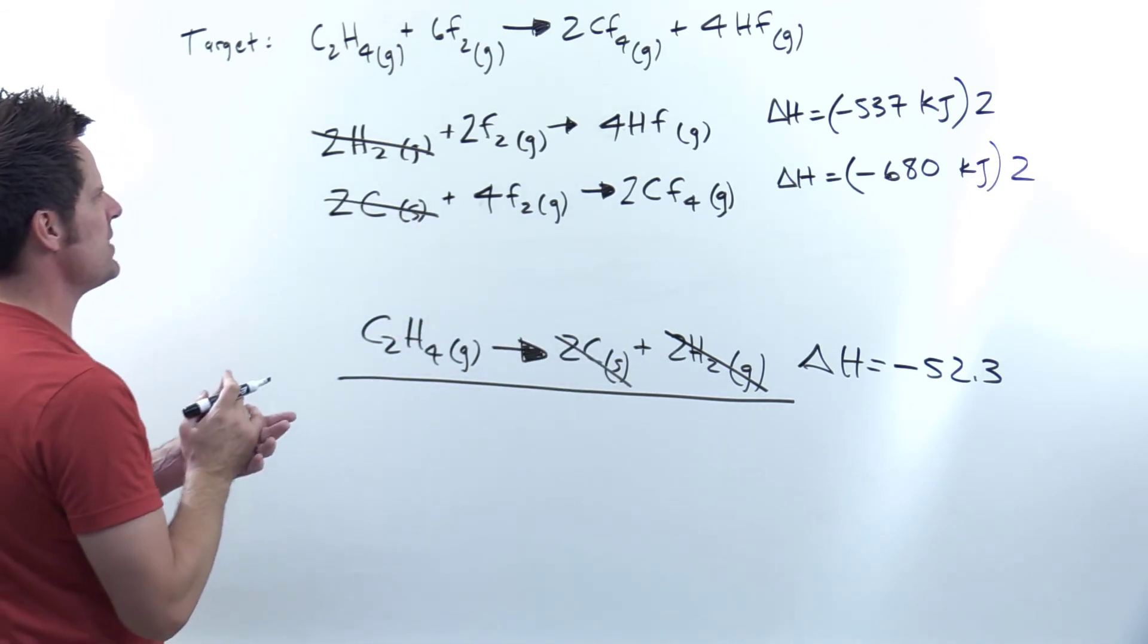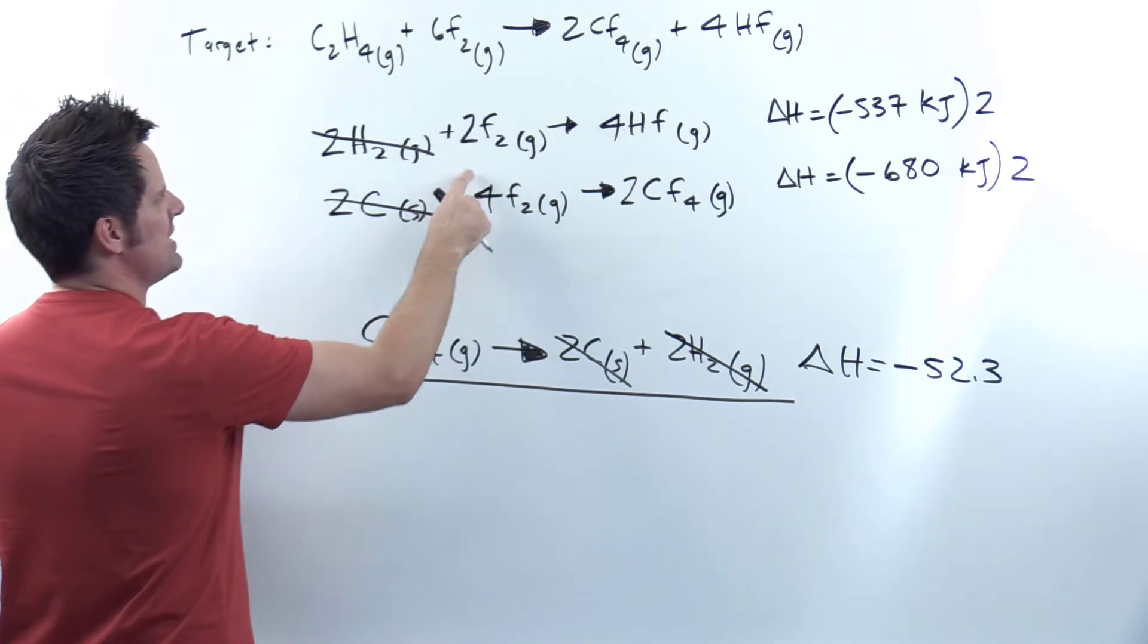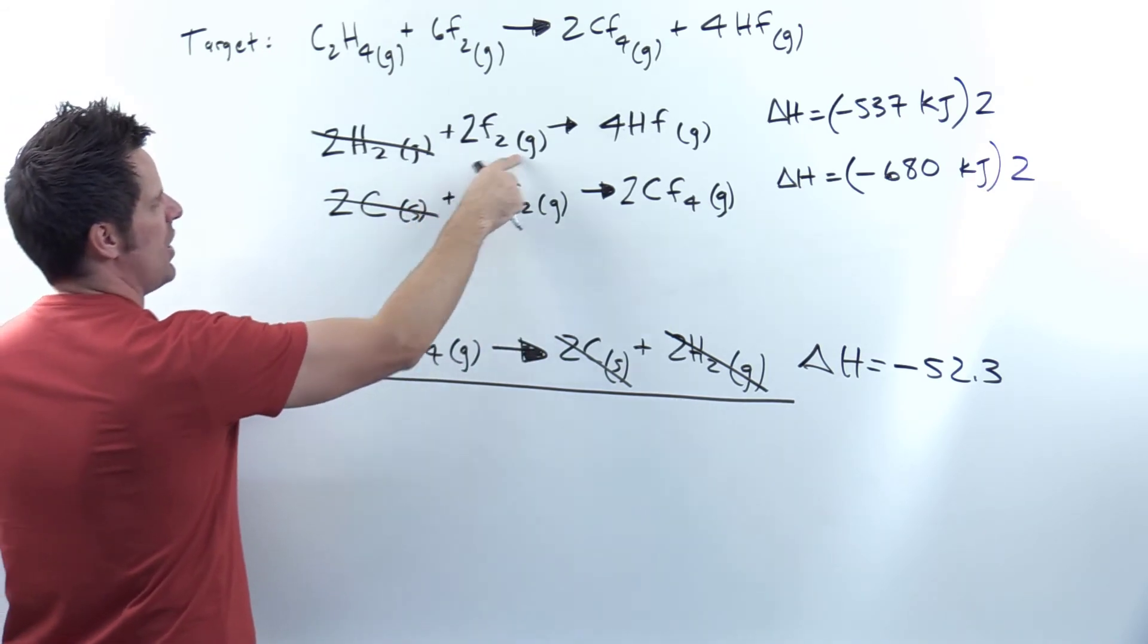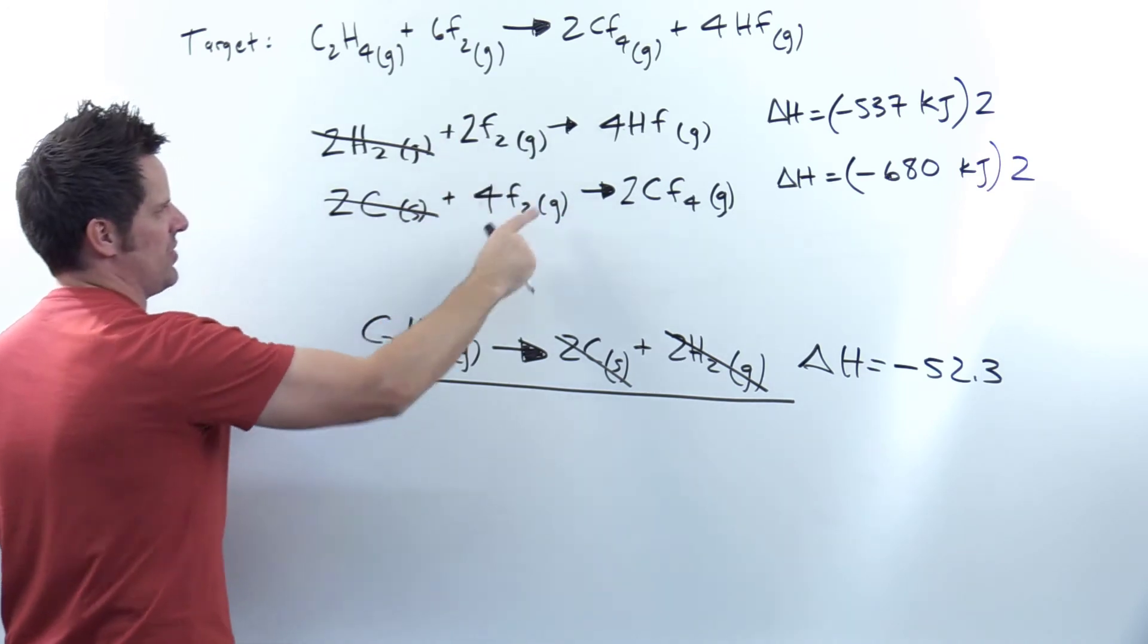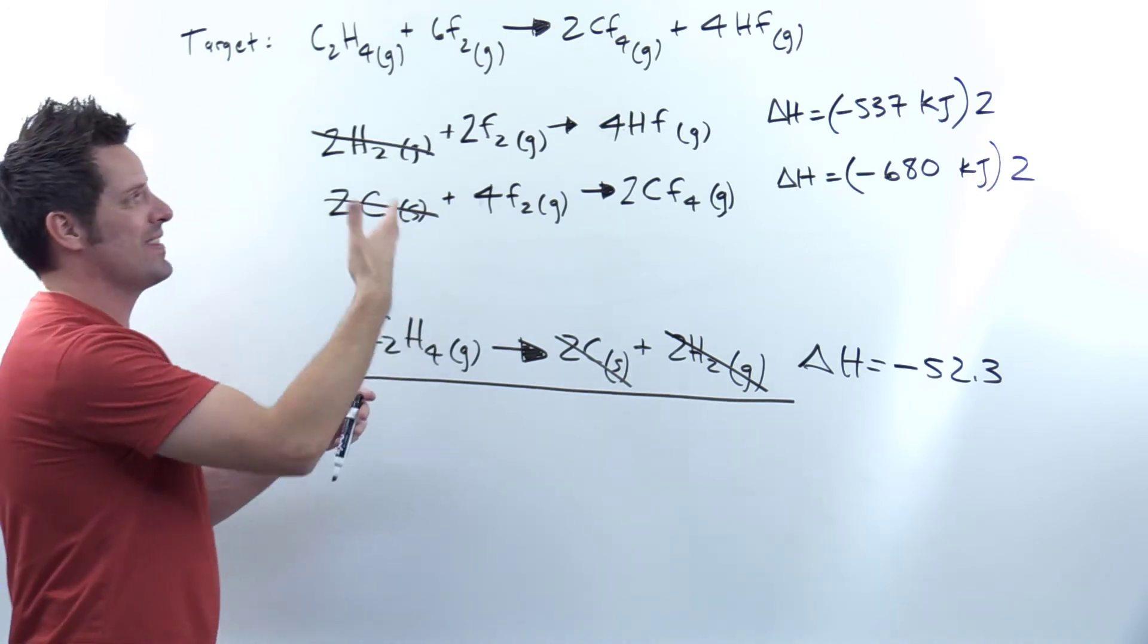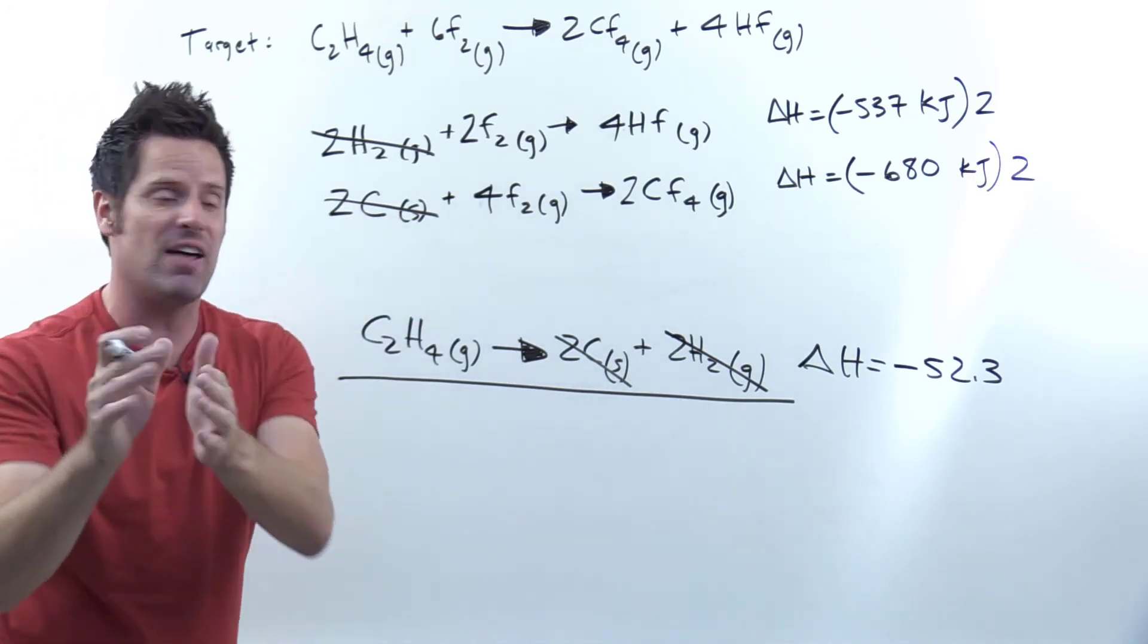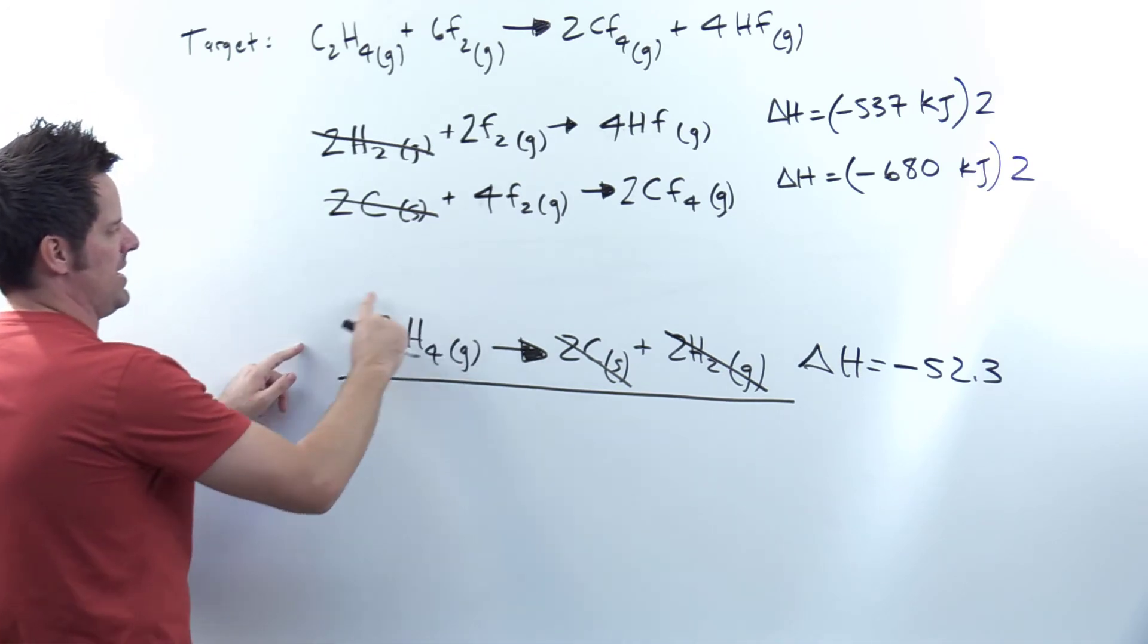What else do I have? I don't think I see anything else that's exactly the same on the left and the right, but what I do have is these two terms. I've got two F2s on the left side of this equation and four F2s on the left side of this equation. Now those don't cancel each other out because they're not the same number and they're on the same side of the equation. So what can I do with them? I can algebraically add them together. But let's start with this term right here.